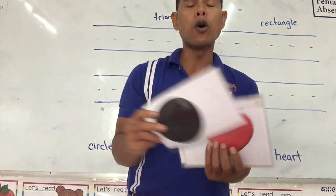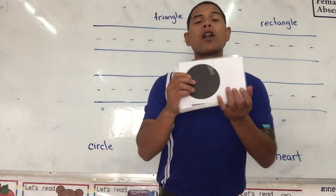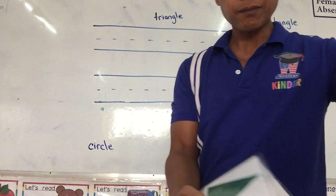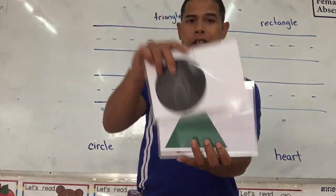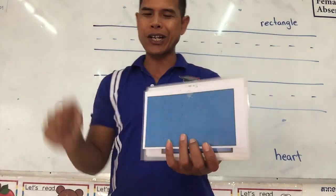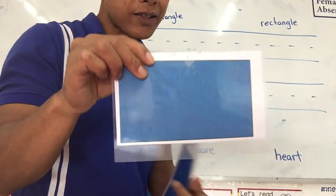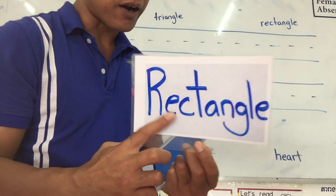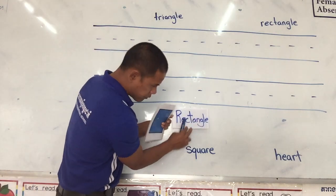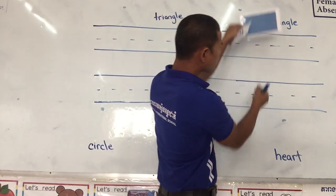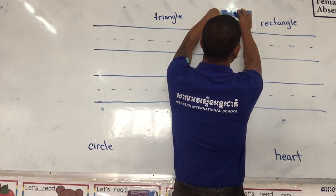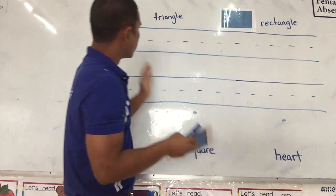So let's see — we will learn all about the shapes, but today we will focus on five of them: triangle, circle, heart, square, and rectangle. Let's start with rectangle — it starts with the letter R. Can you find the word rectangle up there? Yes, that is the word rectangle. We put it up here.